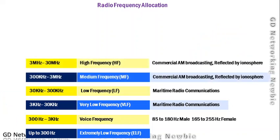From 300 kilohertz to 3 megahertz is known as Medium Frequency (MF), which is used for commercial AM broadcasting. Similarly, High Frequency (HF) from 3 megahertz to 30 megahertz is also used for AM broadcasting — AM stands for Amplitude Modulation.